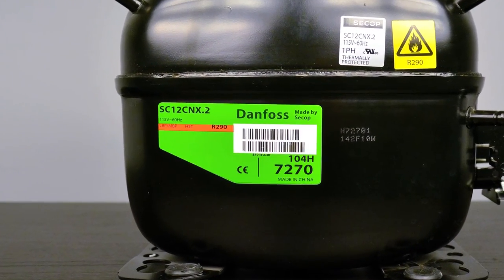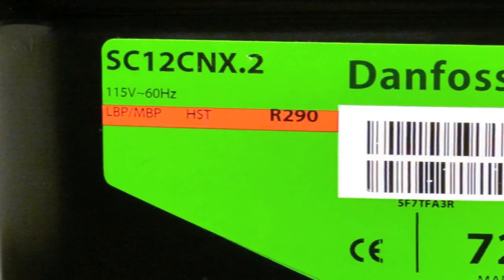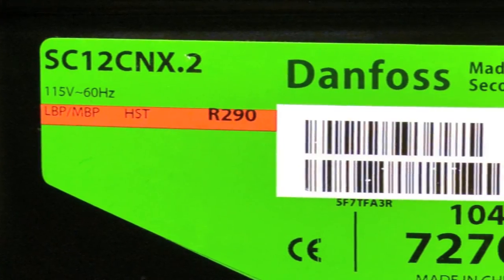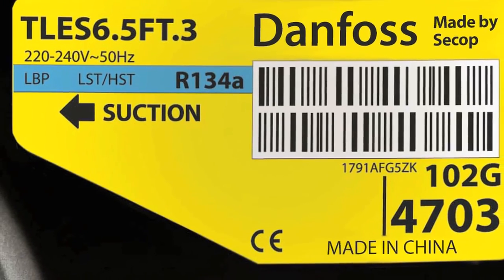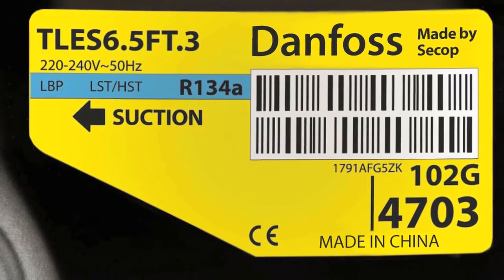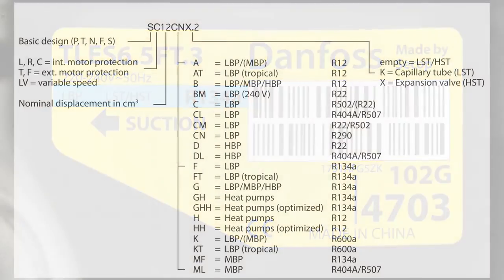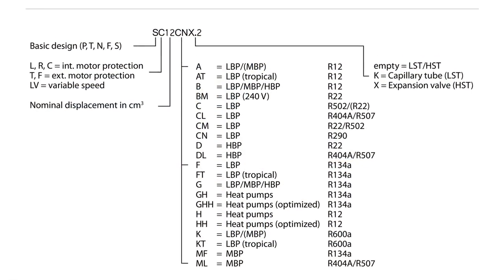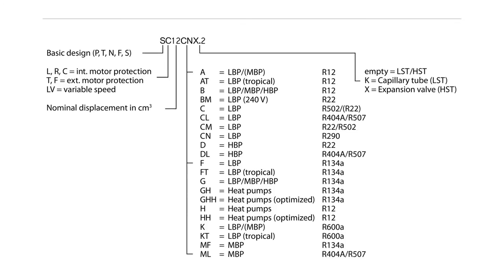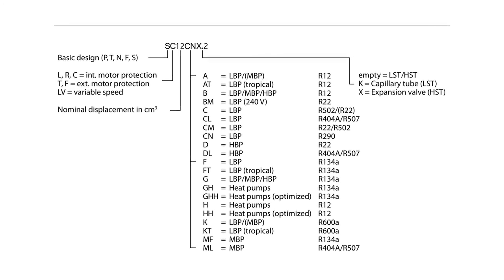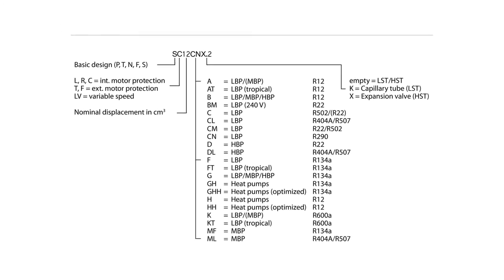Despite often looking like random letters and numbers, model numbers contain a lot of information about a particular product. To help the model number or nomenclature make better sense, this video will explain the nomenclature for the fractional series of Danfoss compressors. Nomenclature is used to describe the features that each compressor offers, signified by a letter or number and by its location in the nomenclature.